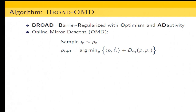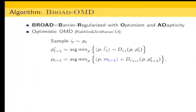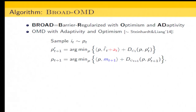The vanilla online mirror descent update rule computes P_T, the sampling distribution at time T+1, by solving an optimization problem. In optimistic online mirror descent, the first line remains the same, but when picking arms, a further update is made based on M_{T+1}, which is an optimistic prediction for L_{T+1}. We also have another element, A_T, which is a second-order term similar to Steinhardt and Liang's previous work.